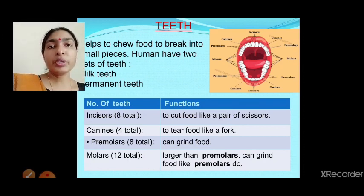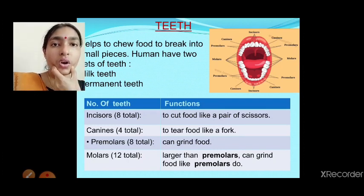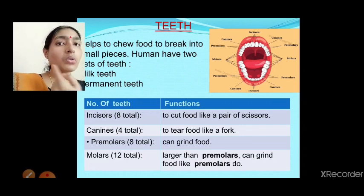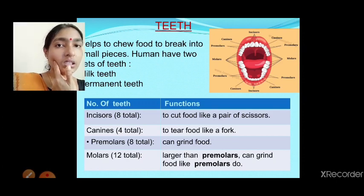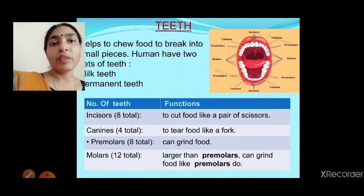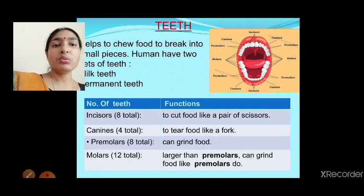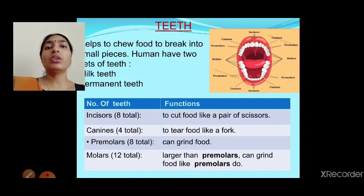After the canines come the premolars — two on each side in both jaws, totaling eight. Premolars help to grind the food. Then come the molars — three on each side in each jaw, totaling twelve. Molars are called grinder teeth and are the most helpful teeth for chewing food. Both molars and premolars help to grind and chew food.